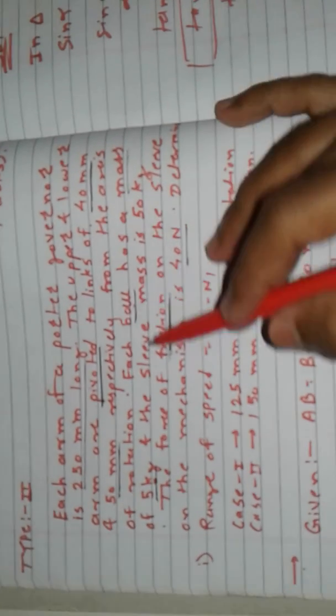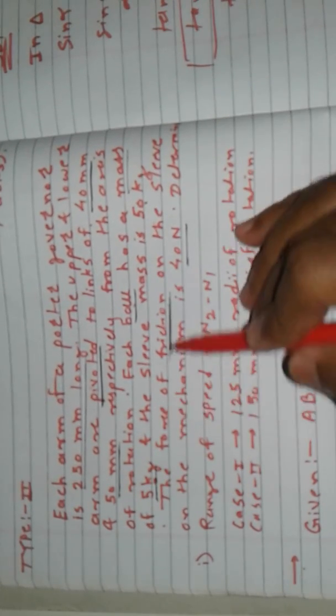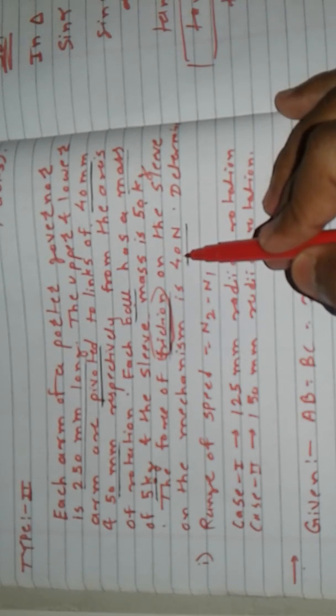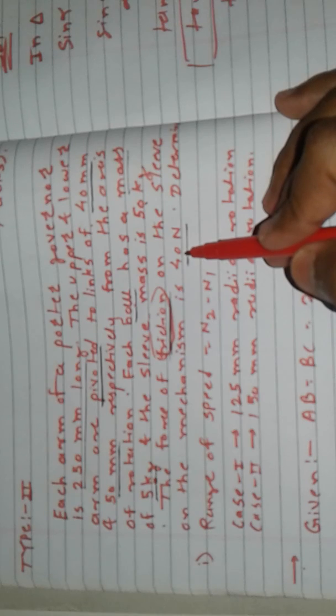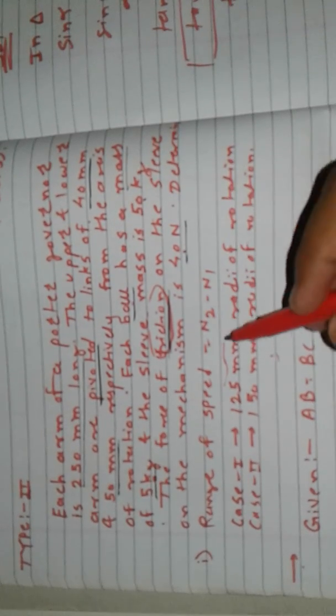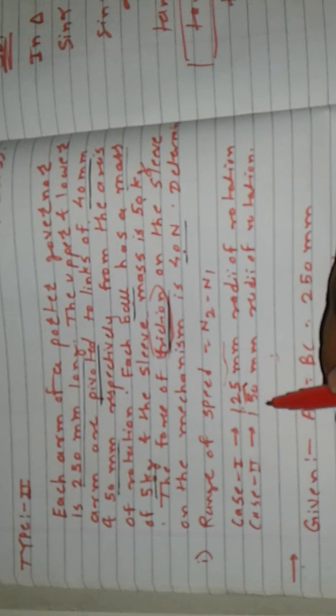The mass of the ball is 5 kg, the mass of the sleeve is 50 kg, and friction is given as 40 Newton. We need to determine the range of speed when the radius of rotation is 125 mm and 150 mm — so there are two cases.